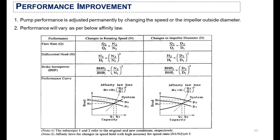On the other hand, you can also improve the performance of an original pump using the affinity law. The affinity law states the impact of impeller diameter and rotating speed of the pump on flow rate, differential head, and brake horsepower. Overall, we get the performance curve which defines the optimum point where the pump efficiency is highest.